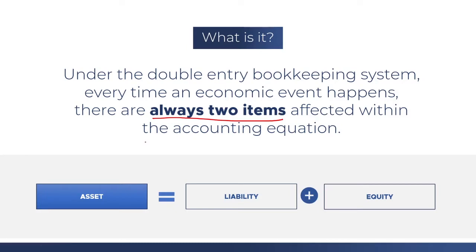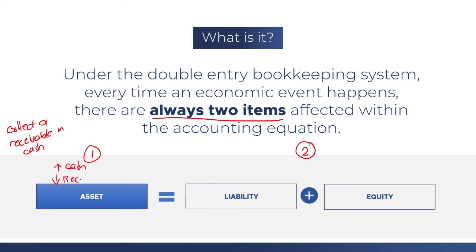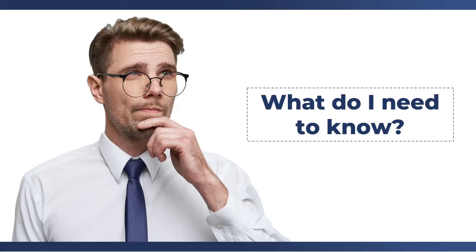It doesn't mean that both sides should be affected — side one and side two, resources and the claims. It can be that only one side is affected in one single transaction. For example, if we collect a receivable in cash, it means that we increase our cash and we decrease our receivable at the same time, which are both under assets with no effect on liabilities and equity. Our accounting equation still holds true. So the challenge in the double entry bookkeeping system is to identify what are the two items that are going to be affected whenever there is a transaction. Mastering the double entry bookkeeping system is the first step to really becoming a very skilled accountant.